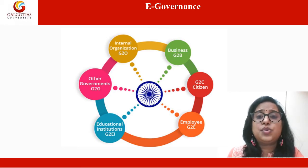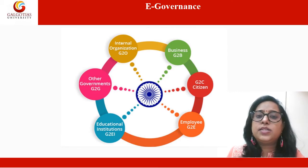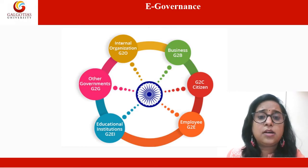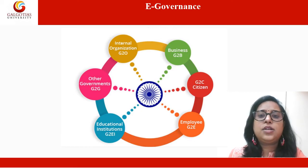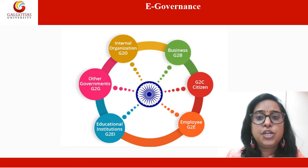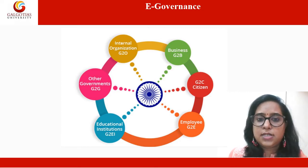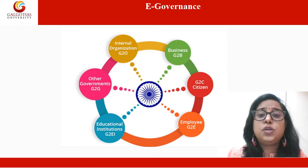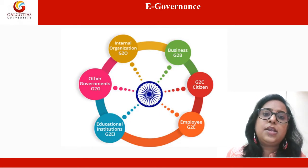E-governance is the use of IT to improve the ability of government to address the needs of society. It includes the publishing of policy and program-related information to transact with citizens, and extends beyond provision of online services to cover the use of IT for strategic planning and reaching development goals. E-democracy is the use of IT to facilitate the ability of all sections of society to participate in the governance of the state, with emphasis on transparency, accountability, and participation. It includes online disclosures of policies, online grievance, judicial, e-referendums, etc.